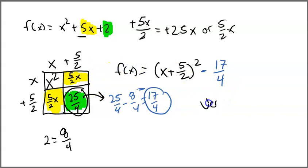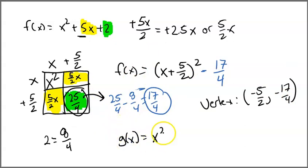So the vertex would be at negative 5 over 2 and negative 17 over 4. You can do the decimals. So I'm going to leave you with a question. What if I have this new function? Can you rewrite this in graphing form and name the vertex? Good luck.